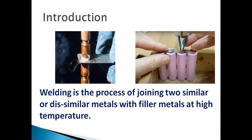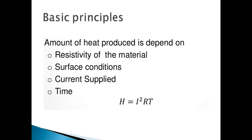Welding is the process of joining two similar or dissimilar metals using a filler metal at high temperature — we need high temperature to melt the metals. In traditional welding a filler material is used, but in electrical welding machines there is no filler metal. Electrical welding is classified based on the formula H = I²RT.